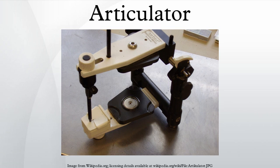An anatomical articulator is an articulator which attempts to reproduce normal mandibular movements during mastication. An adjustable articulator is one that can be adjusted to accommodate the many movements and positions of the mandible in relation to the maxilla as recorded in the mouth.